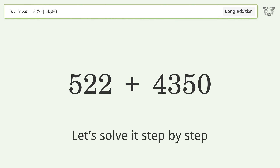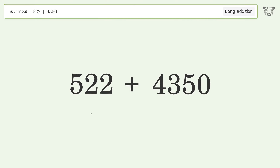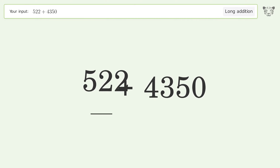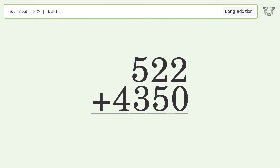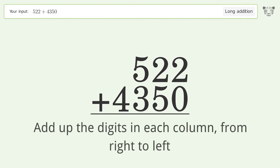Let's solve it step by step. Rewrite the numbers from top to bottom, aligned by their place values, then add up the digits in each column from right to left.